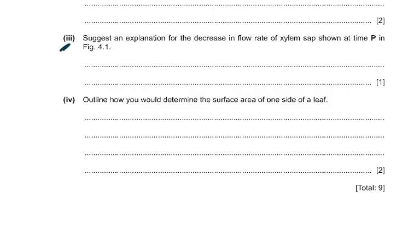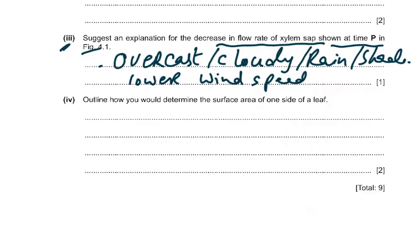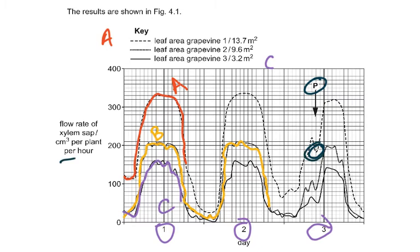For part three: suggest an explanation for the decrease in flow rate of xylem at time P in figure 4.1. At point P, there is a lower rate of transpiration. The answer could be: overcast conditions, cloudy, rain, shade, lesser wind speed, or higher humidity — all these would decrease the rate of transpiration. If somebody wrote 'stomata closed,' that would be wrong, because transpiration is still occurring at this point. Stomata closed is a reject answer.